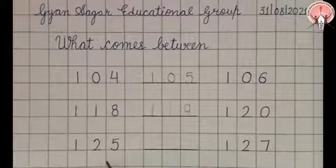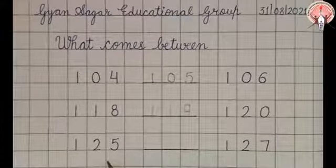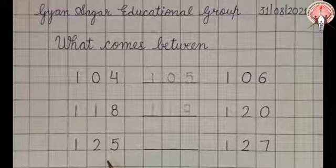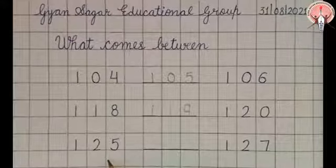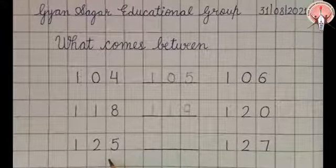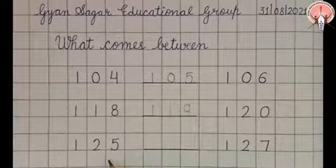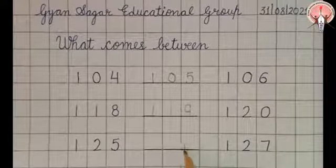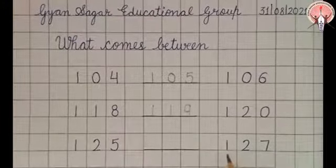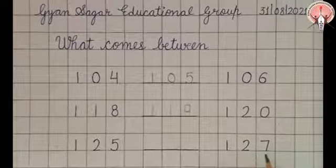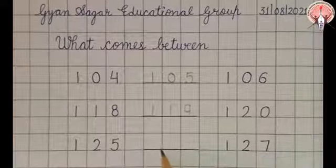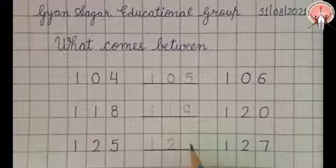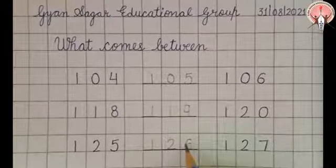counting: 121, 122, 123, 124, 125, 126, 127. So we will write here 126. Okay.